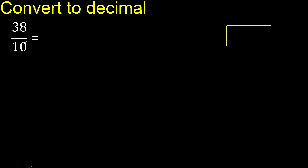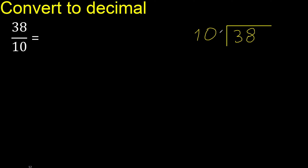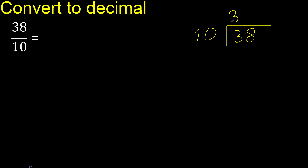38 divided by 10. 38 is not less than 10. Therefore, 10 multiplied by which number is nearest to 38 but not greater? 4 is 40 — 40 is greater. 3 is 30 — 30 is not greater.